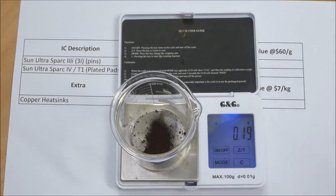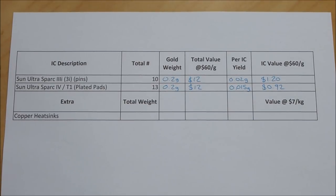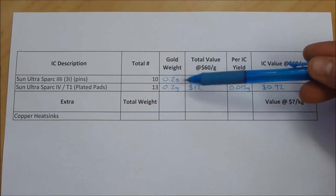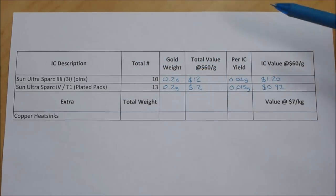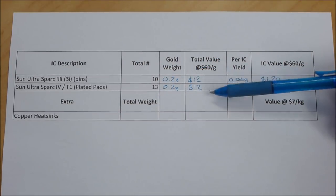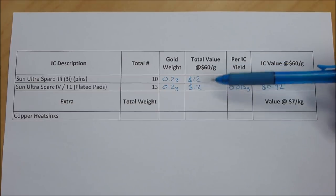So yeah, I'll get the numbers transcribed and we'll do some math and see what these things are worth. Okay guys, I've done the math and how it works out, so we had about 0.2 grams of each of the two types of processors and that gives us about $12 each in gold value, so $24 for that whole stack which is pretty terrible for ceramic processors.